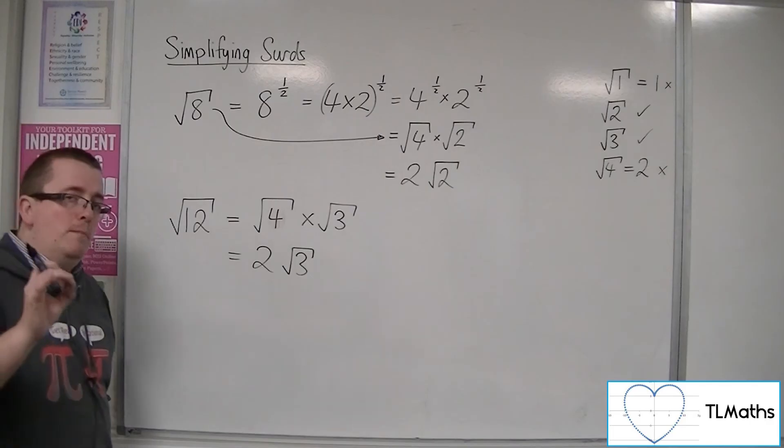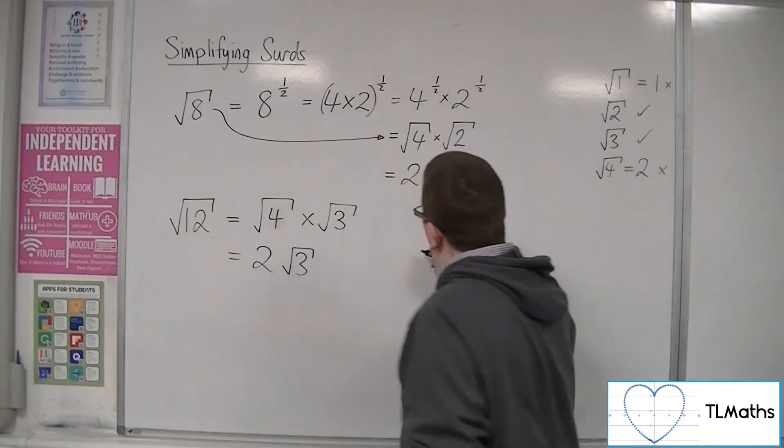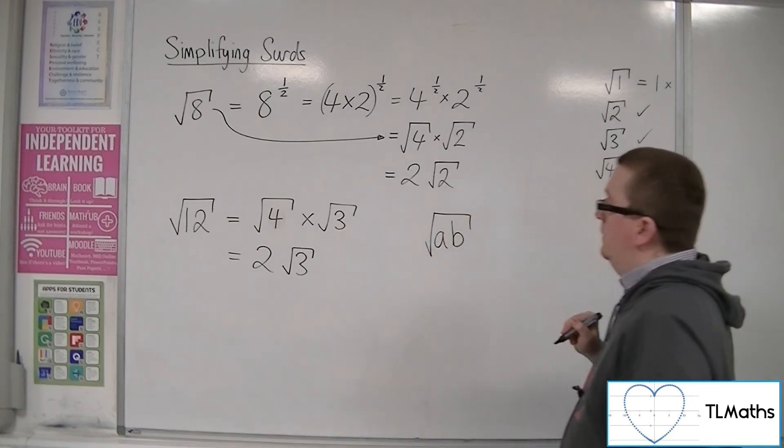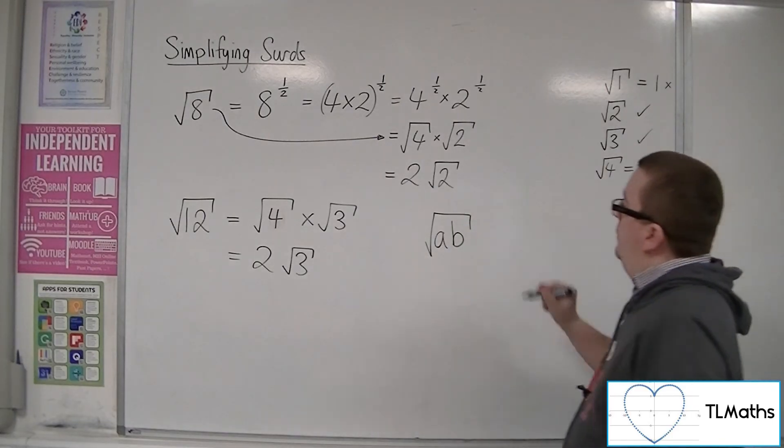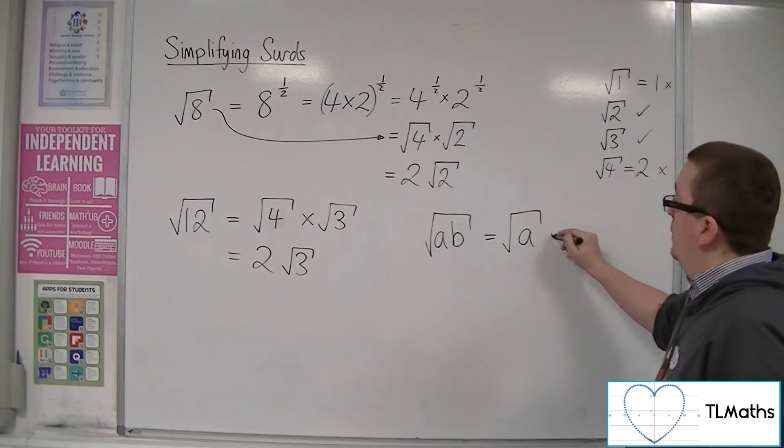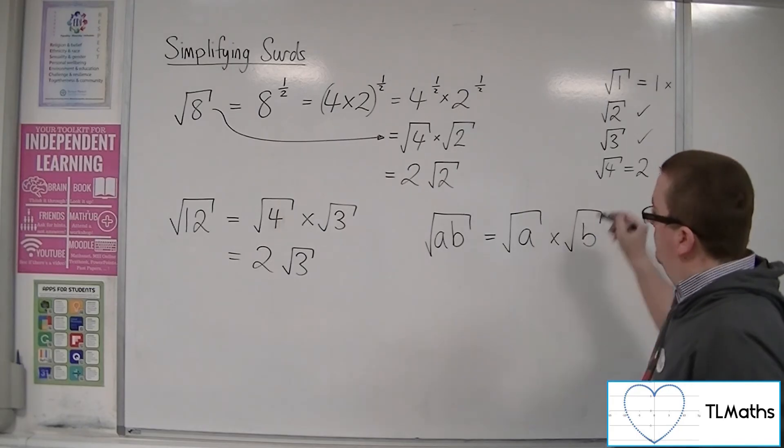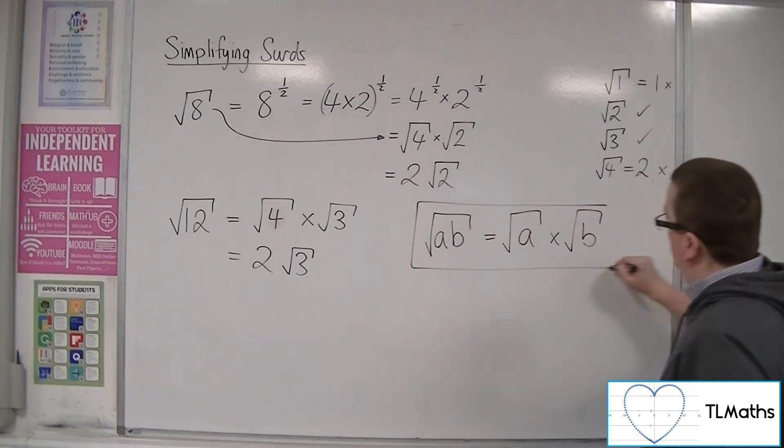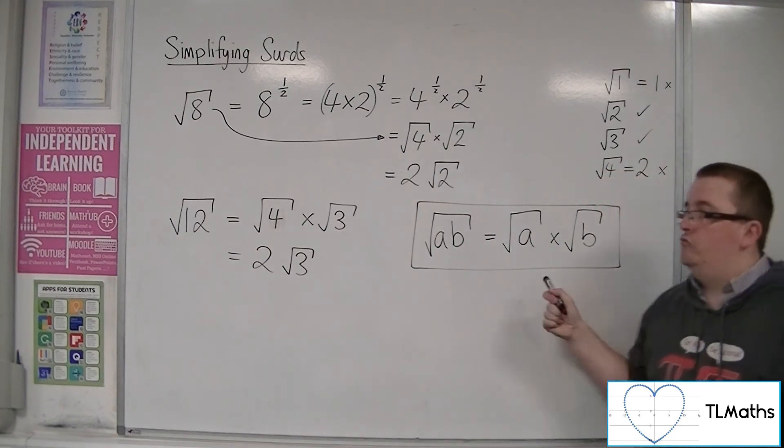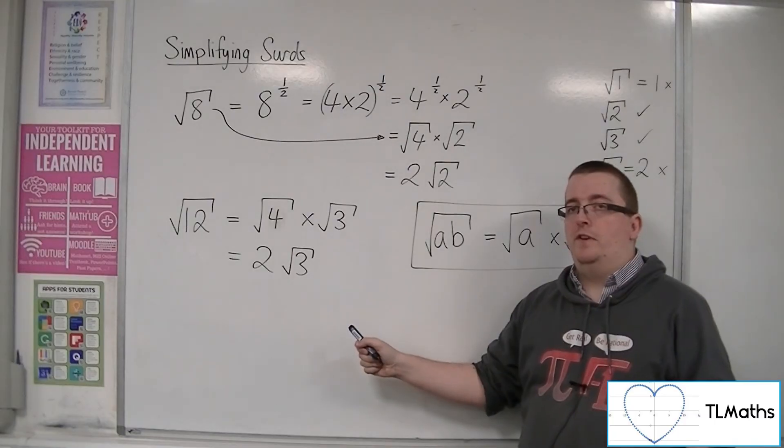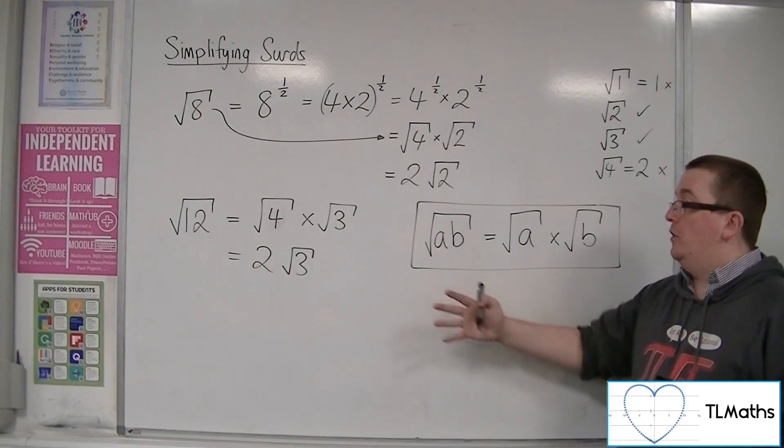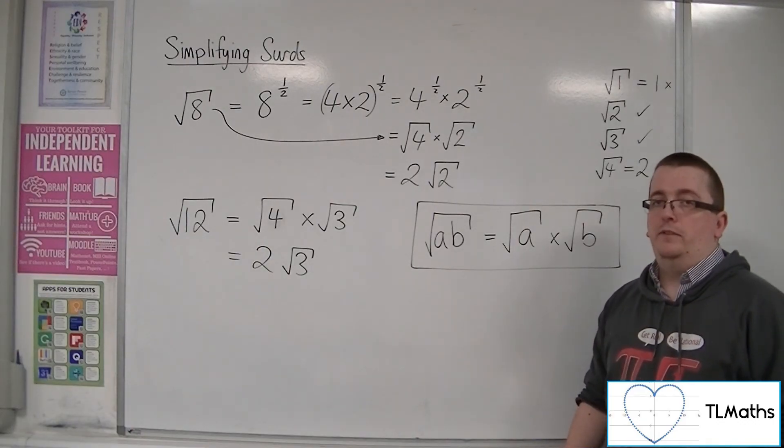So what you need to remember here is that if you have the square root of a times b, then you can break that up into the product of root a and root b. So you are perfectly at liberty to use this rule in order to simplify surds. And I will be using this in the next video to show you more examples of simplifying surds.